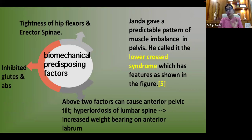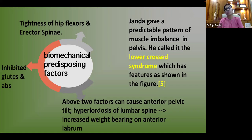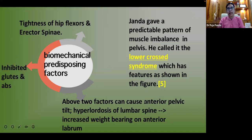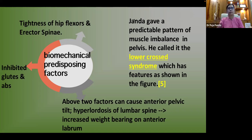Janda described a predictable pattern of muscle imbalance — lower cross syndrome — as another important cause of labral tears. This involves tightness of hip flexors and erector spinae with inhibited gluteals and abdominals. Together these cause anterior pelvic tilt and hyperlordosis, increasing weight bearing on the anterior labrum, creating biomechanical issues that can predispose someone to a labral tear.